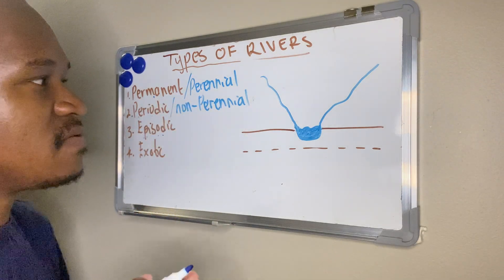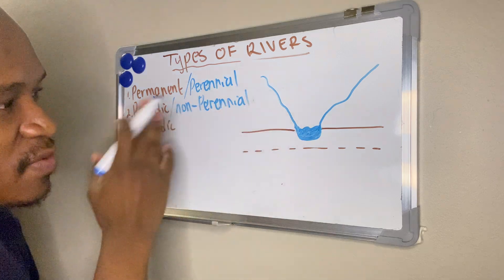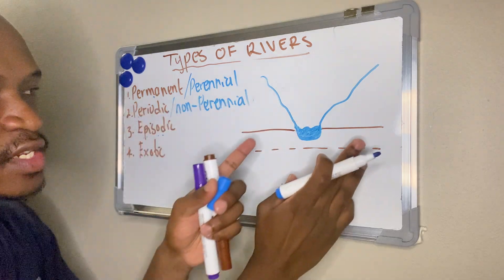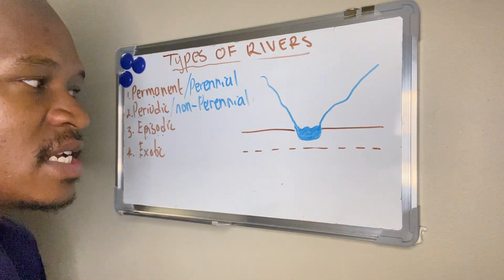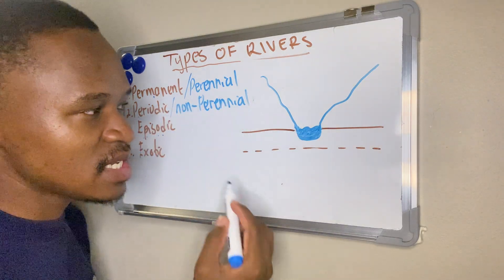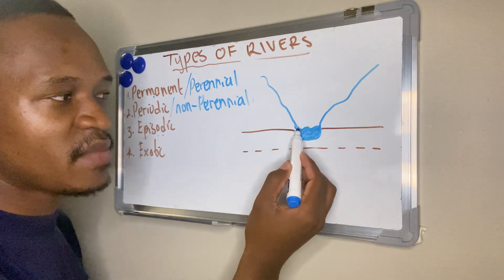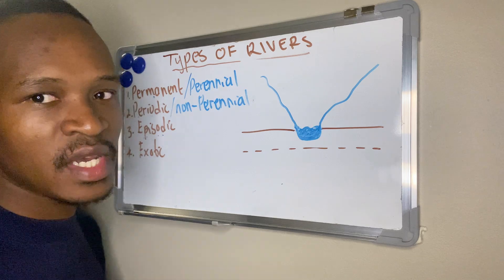Now let me do them individually. But before I go there, let's look at this sketch. On this sketch, I have my river — here's my river in blue.